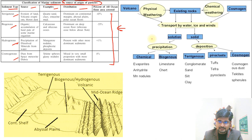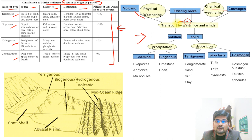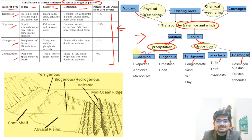There is also a flow diagram useful for an innovative answer: physical weathering from volcanic sources, existing rocks, and cosmogenic material; chemical weathering; transportation by water, ice, and winds; and solution and deposition processes — precipitation and deposition — generate chemical, biogenous, terrigenous, pyroclastic, and cosmogenic sediments.